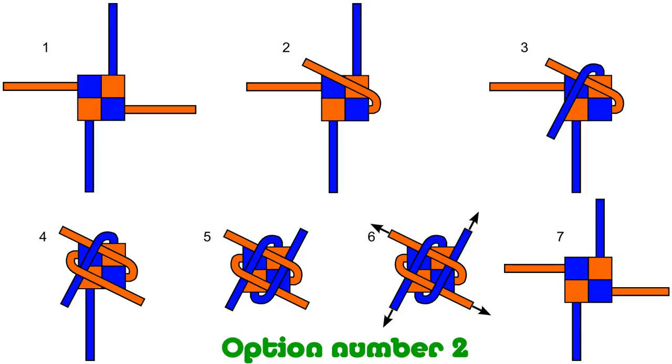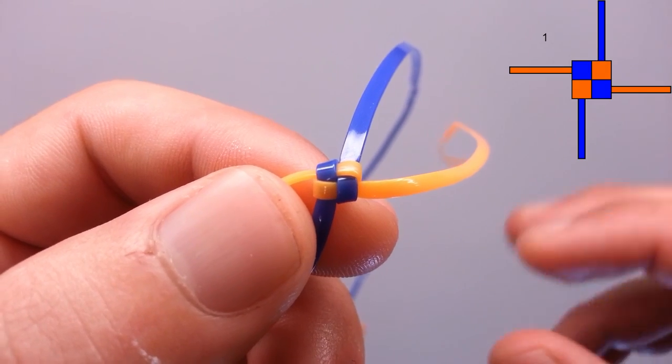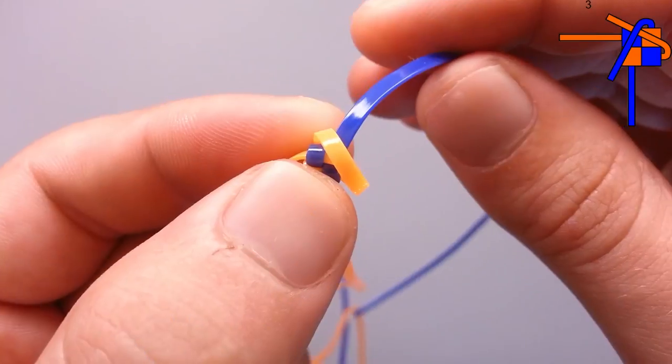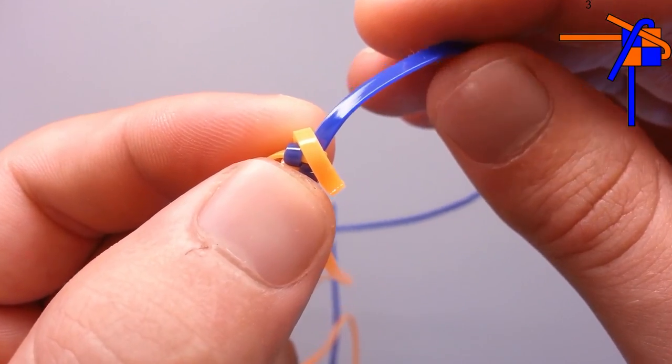Take one string and cross it diagonally. Then take this blue string and cross it over the orange.